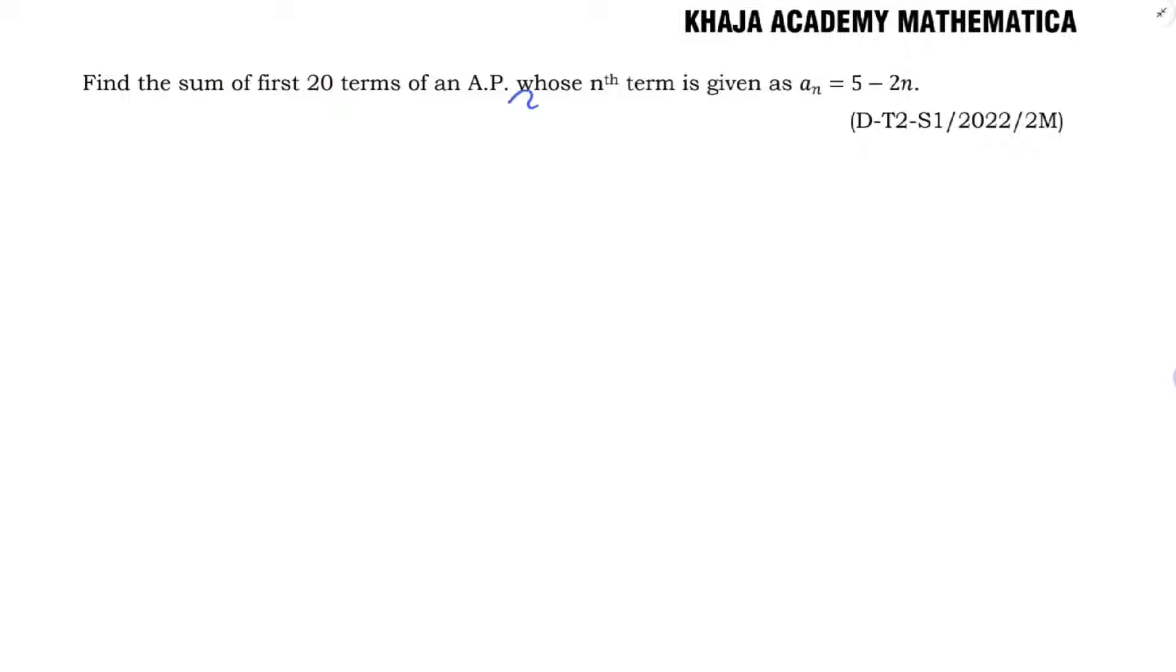Find the sum of first 20 terms of an AP whose nth term is given as AN equals 5 minus 2N. So here AN equals 5 minus 2N. First we will find the series.